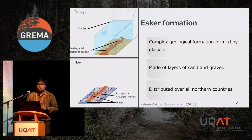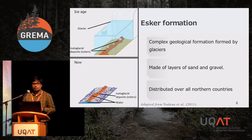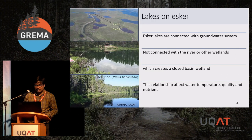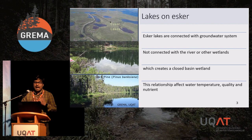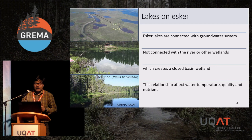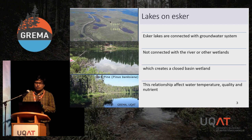Now, these ESCRs are distributed over all northern countries, including Canada. The lakes on ESCRs are different than typical boreal lakes because these ESCRs are sometimes connected with the groundwater system and they are not connected with other river systems or other wetlands. This type of habitat actually makes them closed basin wetlands. This relationship also affects the water temperature, water quality, and nutrients.